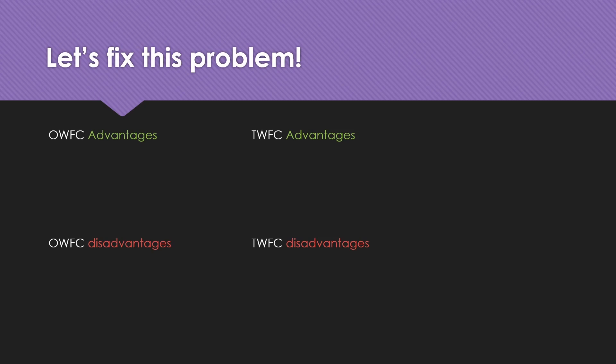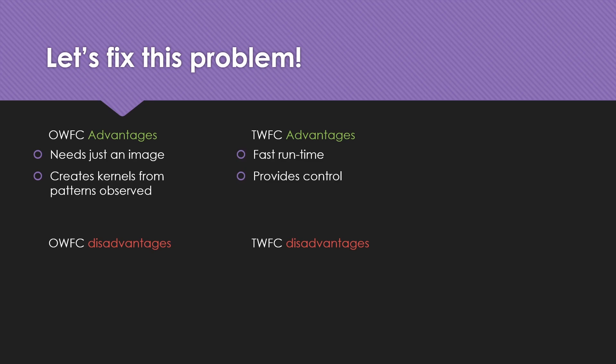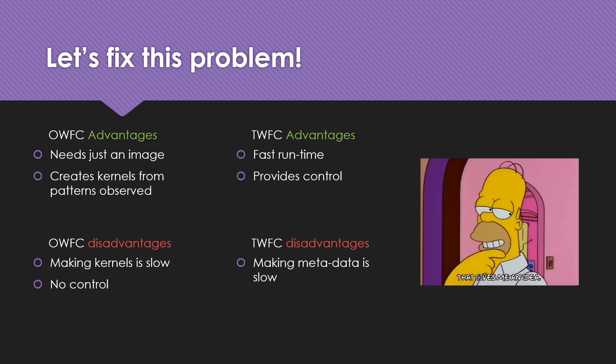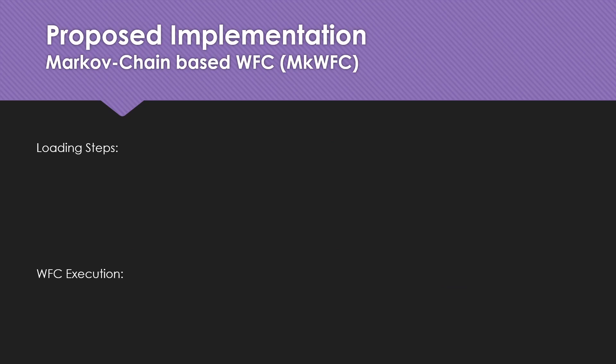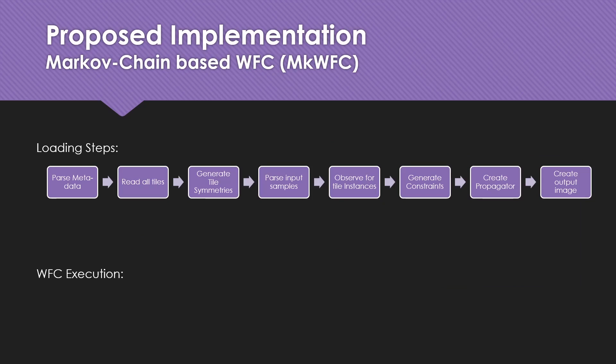So we need to fix this problem. To do so, we look at the advantages and drawbacks of both models. OWFC requires just an image and can create kernels from patterns in the input sample, whereas TWFC offers very fast runtime and control over proceduralness. The disadvantage of OWFC is that making kernels is slow with limited control, and the TWFC disadvantage is that making metadata is really slow. This gives us the idea of proposing an implementation that uses the best of both worlds.